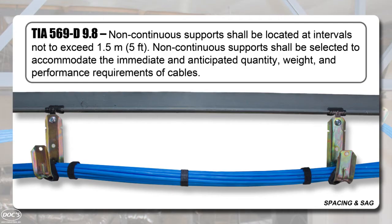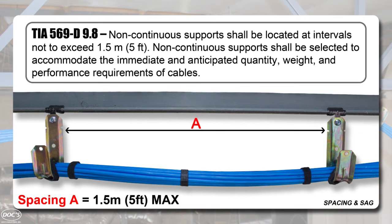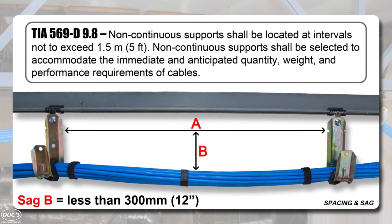The maximum allowable spacing between cable supports is about five feet. The cable tension should allow for no more than about a foot of sag between each support. It is best to stagger the spacing on a long run to prevent harmonic interference or crossover.